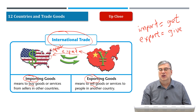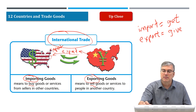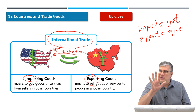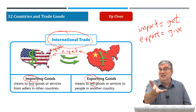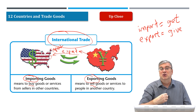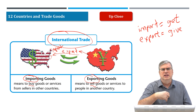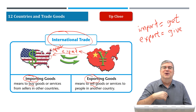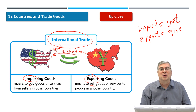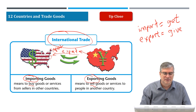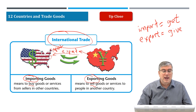Import means to buy goods or services from sellers in other countries. Export means to sell or send goods or services to people in another country. To keep it simple: import is like "get" and export is like "give" — though of course when you export, you don't just give it away, you sell it or send it to another person for money.